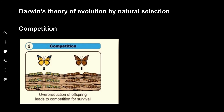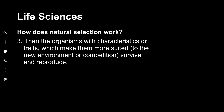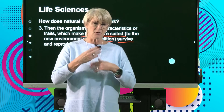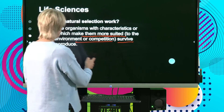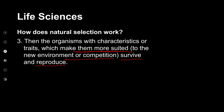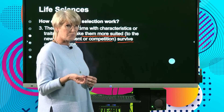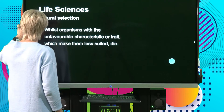There are lots of offspring, and there's lots of competition between all these organisms because of overproduction — that then becomes competition for survival. The organisms with characteristics which make them more suited to the new environment or to the competition survive. When they survive, they continue in their life cycle, become sexually mature, and then reproduce, passing on their favorable characteristic.